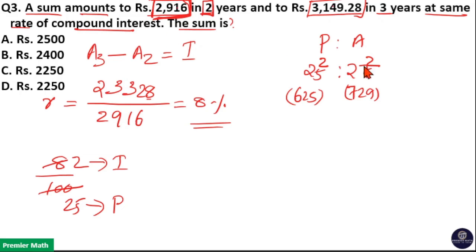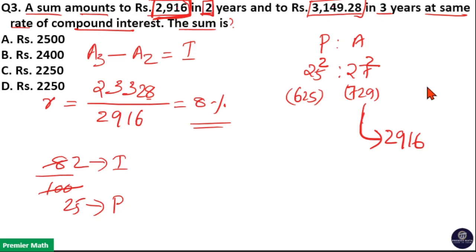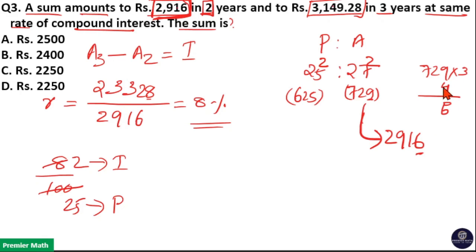729 parts equals the amount at the end of 2 years, which is 2916. So 729 parts = 2916. To find one part: 2916 divided by 729. Checking the unit digit, 9 × 4 = 36, and 729 goes 4 times into 2916, so one part equals 4.